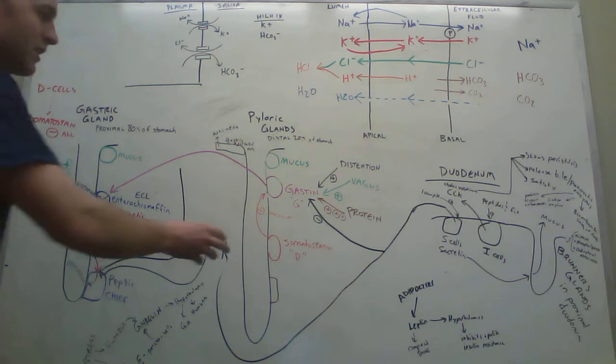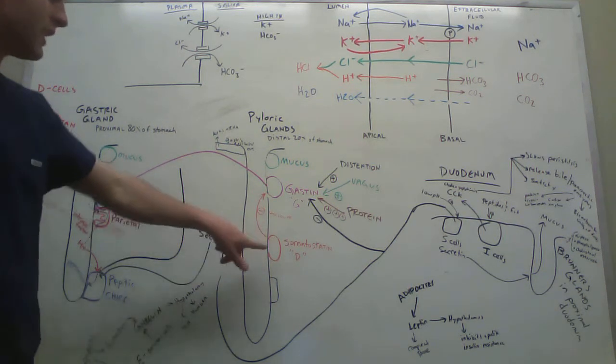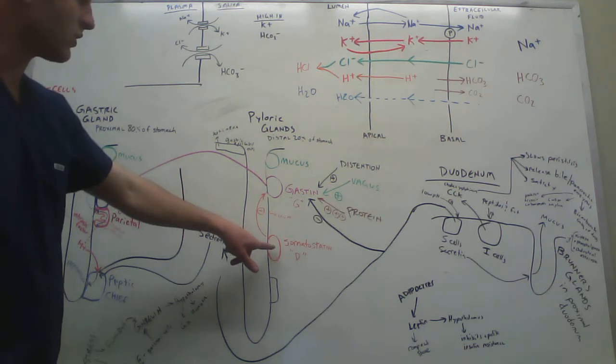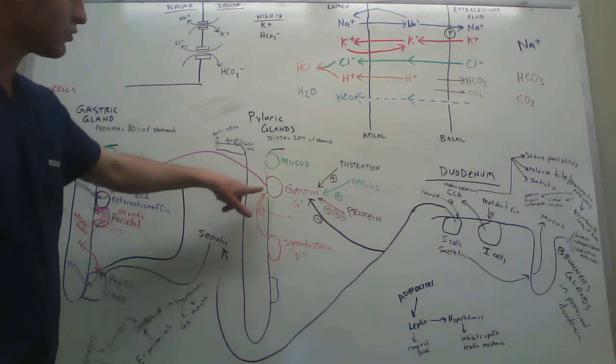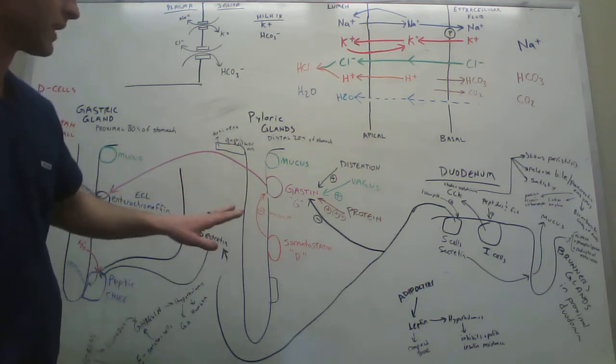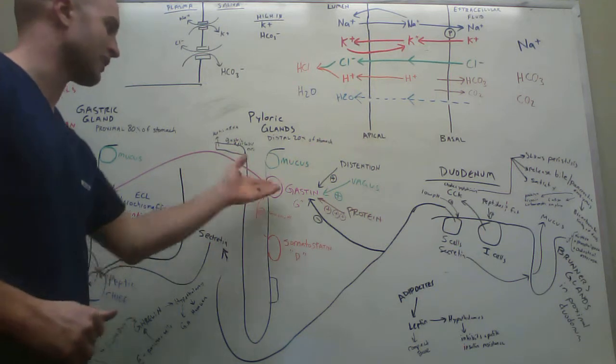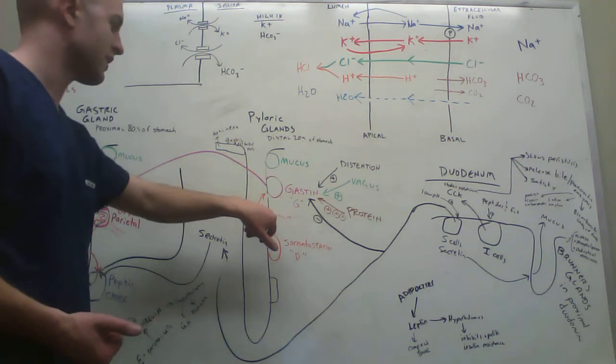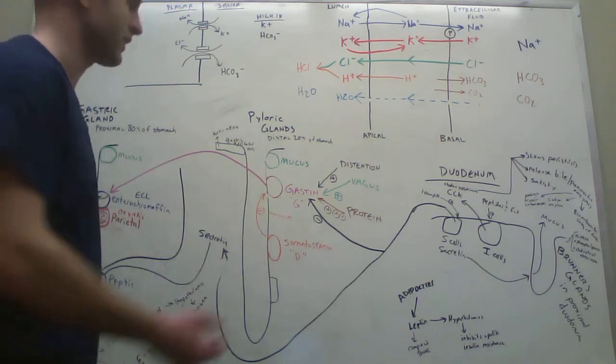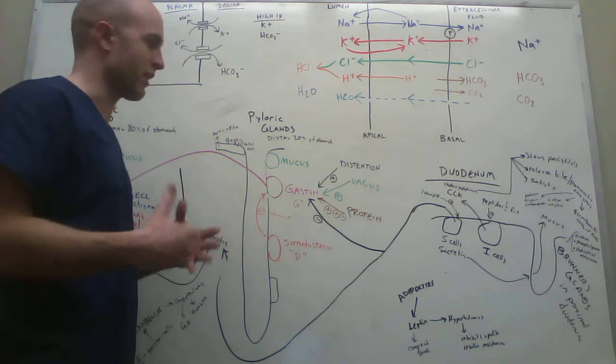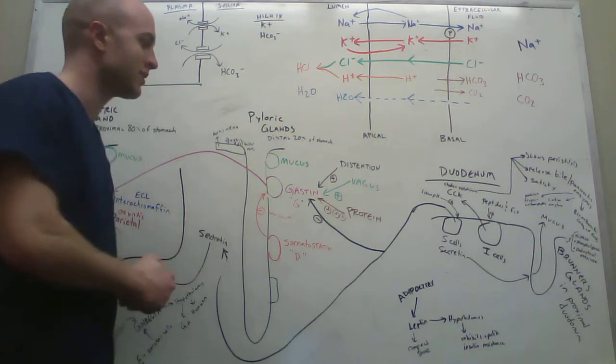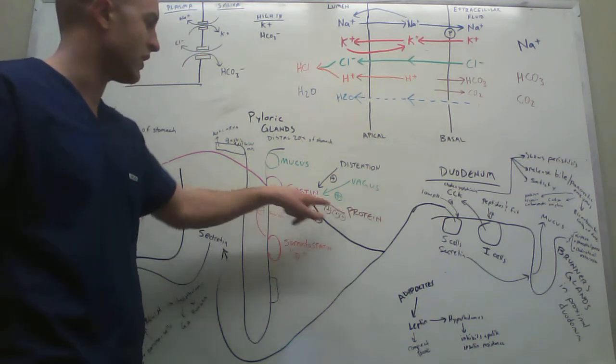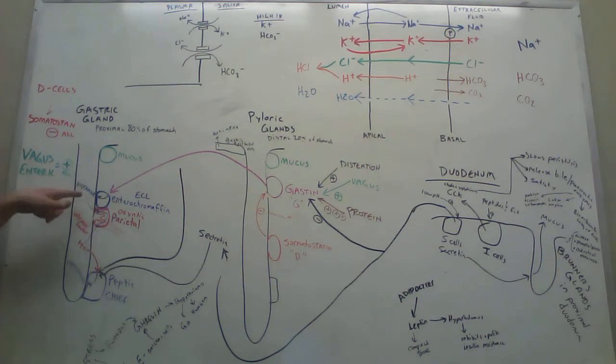Let's talk about somatostatin, the D cells. If there's a very low pH, D cells are going to release somatostatin. Somatostatin triggers the G cells, or gastrin cells, to stop. It has an inhibitory effect. There's quite a bit of things that have inhibitory effects on these gastrin cells. The S cells and the somatostatin cells have inhibitory effects. Protein triggers gastrin cells to release gastrin. Gastrin triggers enterochromaffin cells to release histamine. Histamine triggers oxyntic parietal cells to release acid or H+. And then the acid triggers the peptic cells to release pepsinogen and everything gets broken down.